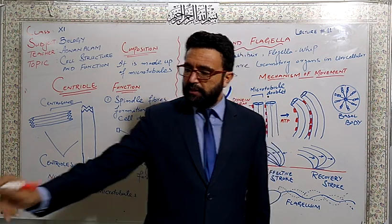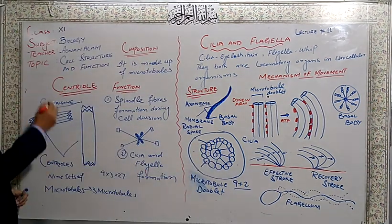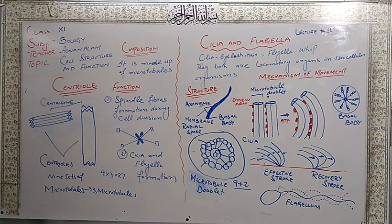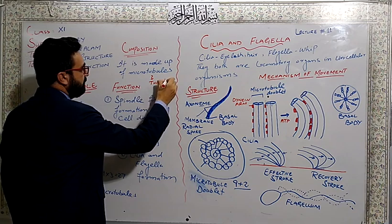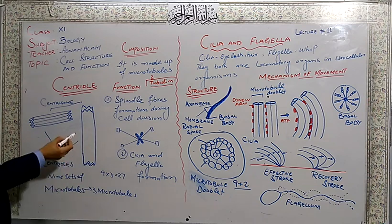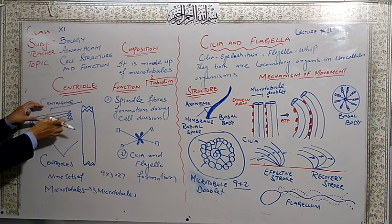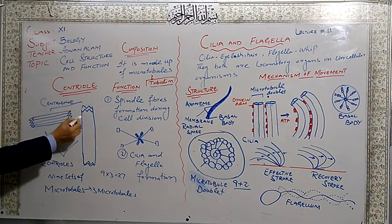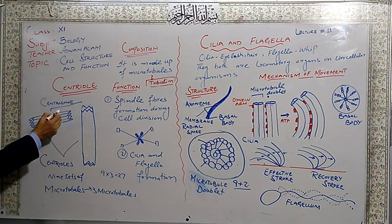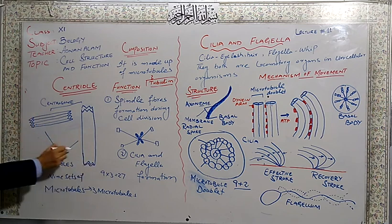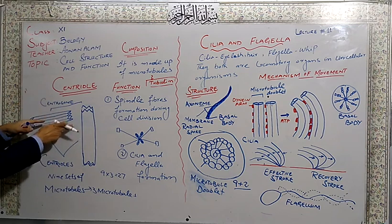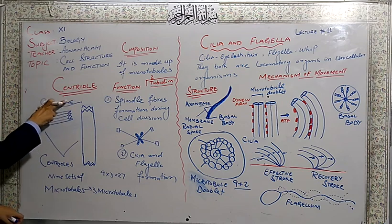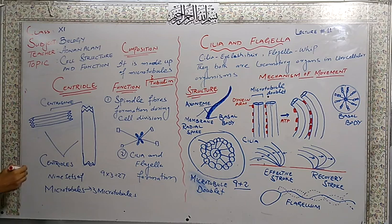So let's start without any delay. The first topic is the centriole. The centriole is composed of microtubules. Microtubules are tubular structures made of a protein called tubulin. These are long cylindrical shapes. Each centriole consists of two, and a pair of centrioles is called centrosomes.